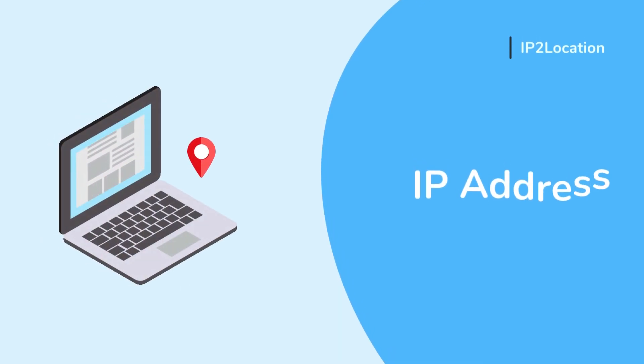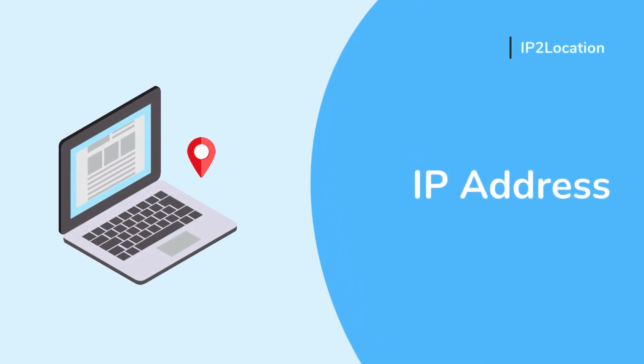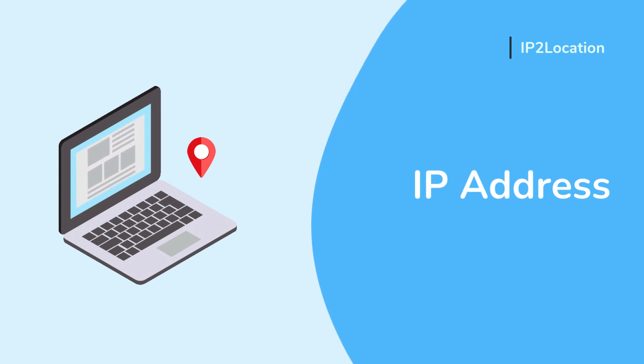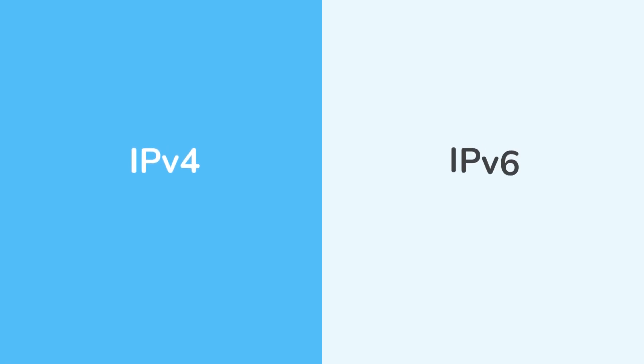An IP address is a unique numerical label assigned to devices on a network, allowing them to communicate with each other over the internet. There are two versions of IP address: IPv4 and IPv6.